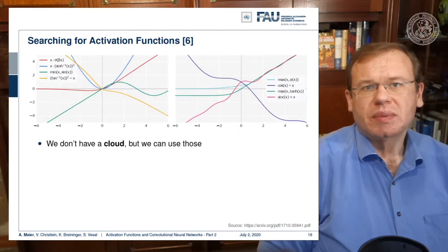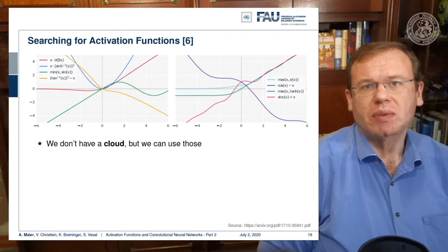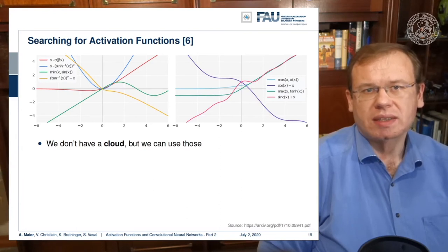We can see that these are activation functions that they found useful. So we can't do the procedure ourselves. But of course, we can have a look at the results that they found. Here are some examples. And interestingly, you can see that some of the results that they produced, even no longer result in convex functions.